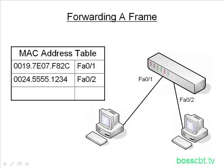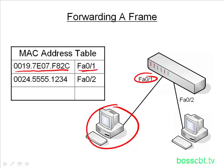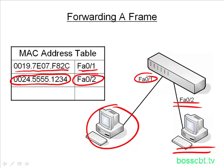For instance, looking at this PC here, we can see it's connected to port FA01. This PC has a MAC address, and the switch's MAC address table says: I know this MAC address lives on this port. It does that with every device. Our second PC has its own MAC address, it's connected to port FA02, and the MAC address table reflects that. So the switch knows every device and what port every device hangs off of.